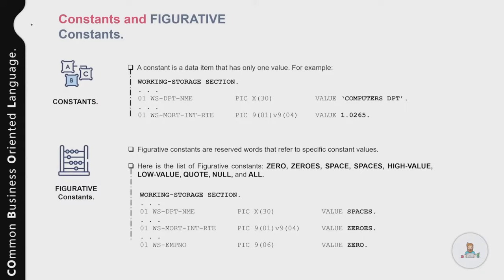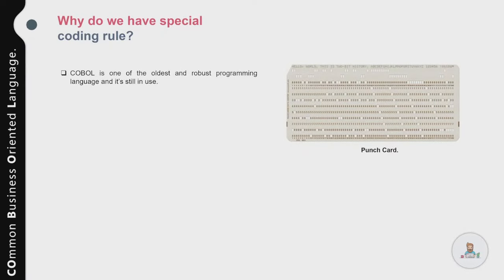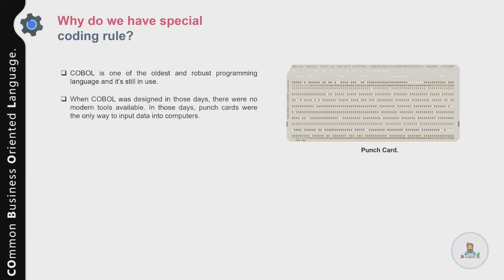Now let's talk about the rules and guidelines for writing a COBOL program. COBOL has special coding rules because when COBOL was designed in the 1960s and 70s, punch cards were the only way to input data into computers. Punch cards are paper cards where holes are punched by hand or machine, and these holes represent computer data and instructions.